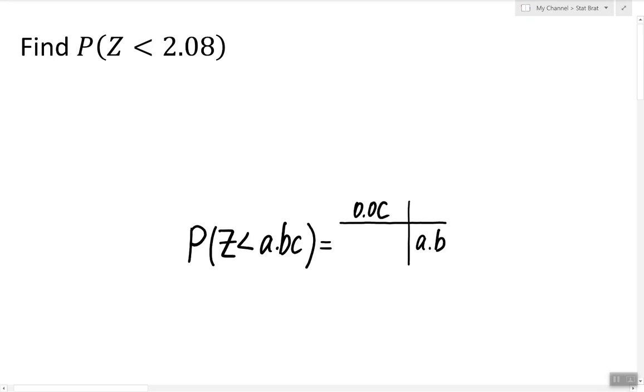In our case, we have the question that's asking to find the probability of z being less than 2.08. So it's in the form, the answer to which we already know. So to answer this question,